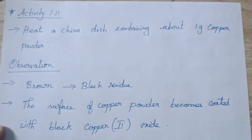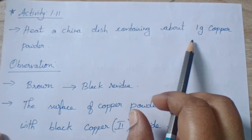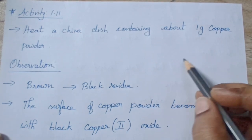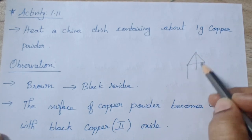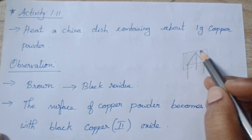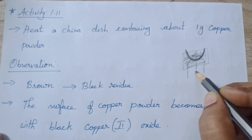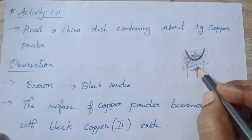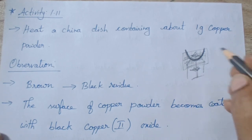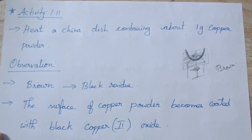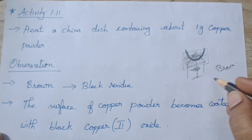The next and last activity from this chapter is Activity 1.11. Heat a china dish containing about 1 gram of copper powder. We are going to heat the copper powder and see what reaction is happening. We take a tripod stand, place a wire gauge above it, and above the wire gauge keep the china dish which contains the copper. Below that, keep a spirit lamp or Bunsen burner. If you heat this — the color of copper is brown.